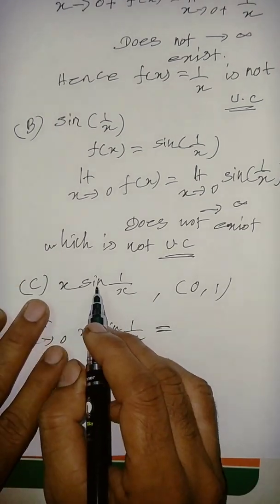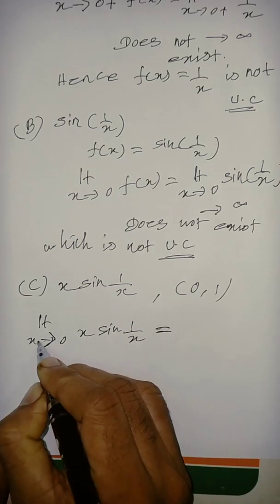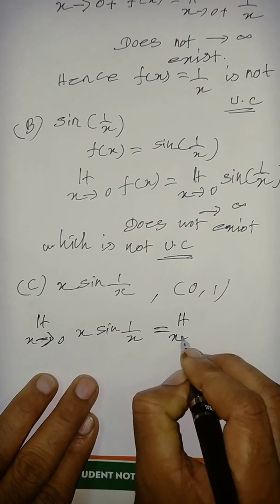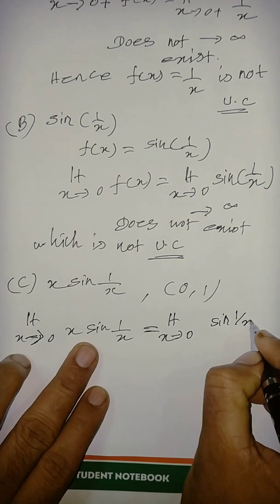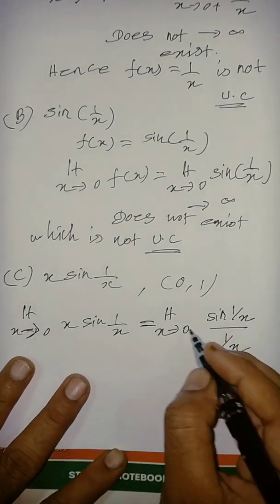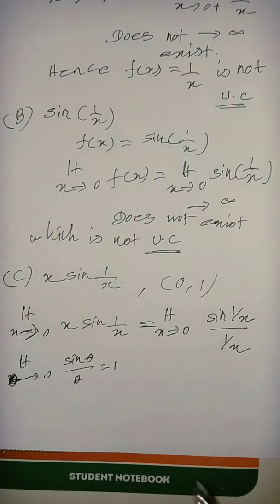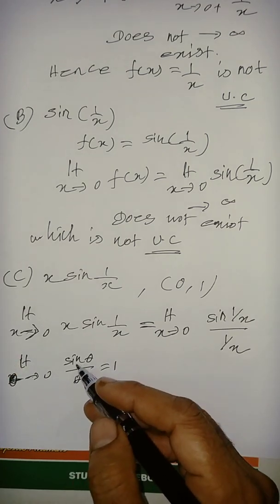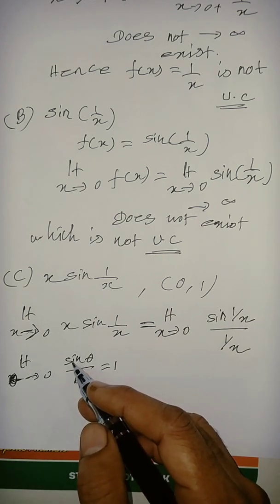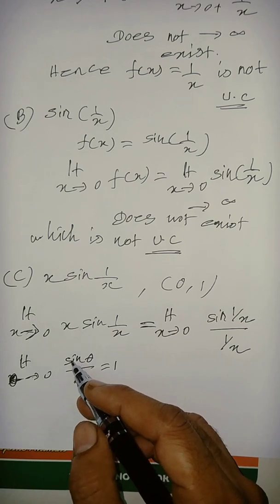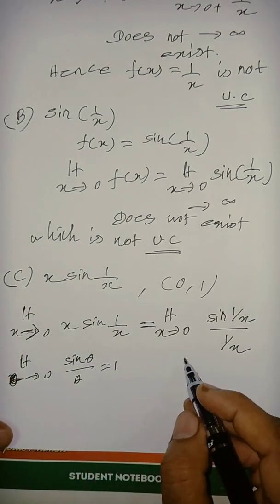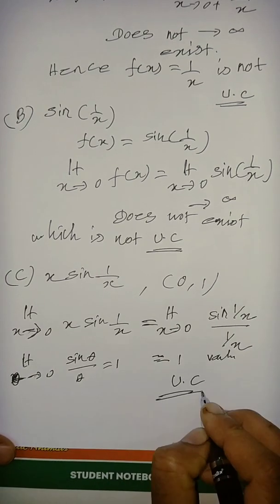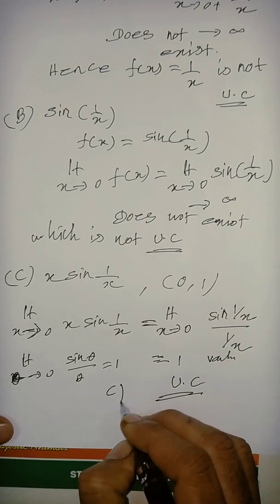The third option is f(x) = x·sin(1/x). Applying the same condition at the endpoint, the limit as x tends to 0 of x·sin(1/x) can be rewritten as sin(1/x) / (1/x). We know that the limit of sin(θ)/θ as θ tends to 0 equals 1 — this follows from the standard result, confirmed via L'Hôpital's rule. So the limit equals 1, it exists, and therefore x·sin(1/x) is uniformly continuous. Option C is uniformly continuous.